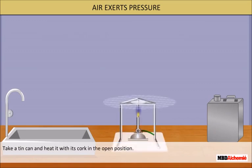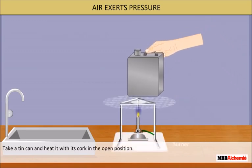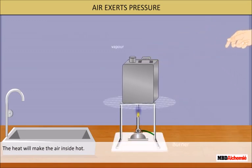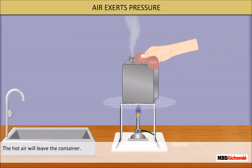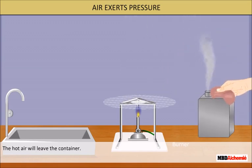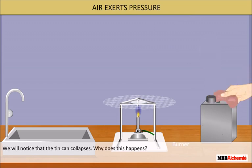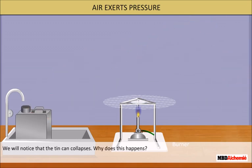Take a tin can and heat it with its cork in the open position. The heat will make the air inside hot. The hot air will leave the container. Now quickly close the container. We will notice that the tin can collapses.